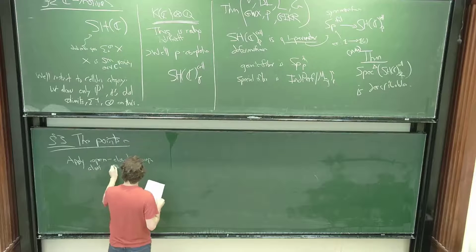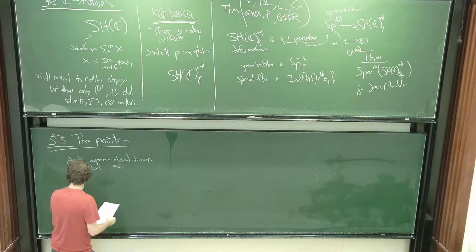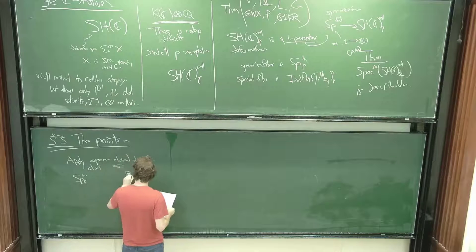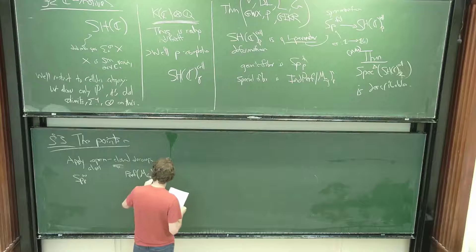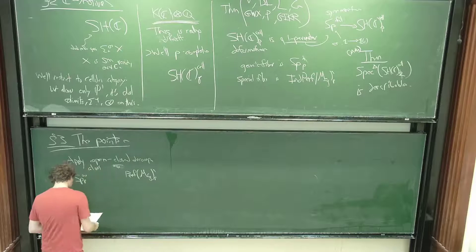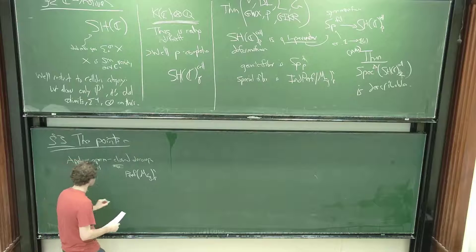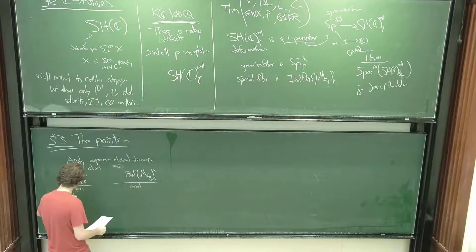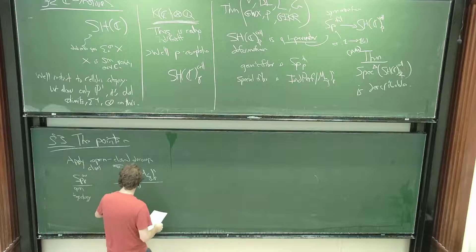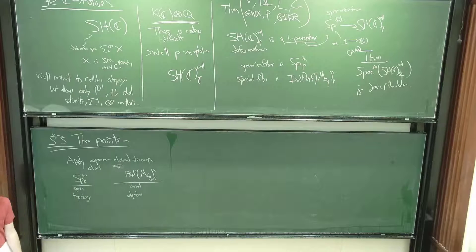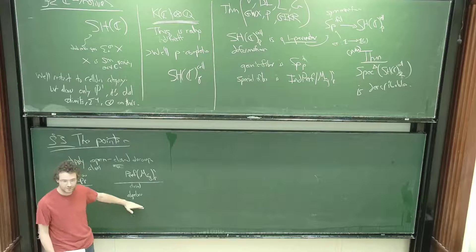The open piece is where all the topology is happening, and the closed piece is all algebra. Normally you think of the topology as being the hard part, and that's already solved for us — but actually this algebra part just ends up being wicked hard. And then of course you have to glue them together, which is probably the diciest part of it all. We know that the open piece — the Balmer spectrum of P-complete spectra — is the space H I defined: that sequence of points.